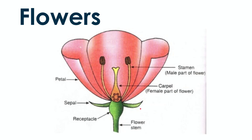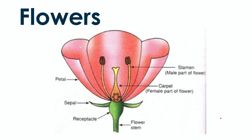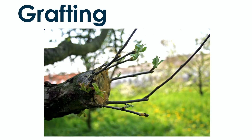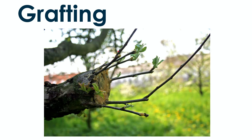If all the apples just fell straight off the tree and landed right next to the mother tree, all the baby trees would be competing for sunlight and water in the mother tree's shade. Flowers are helpful because they package seeds inside fruit that gets dispersed much farther away.